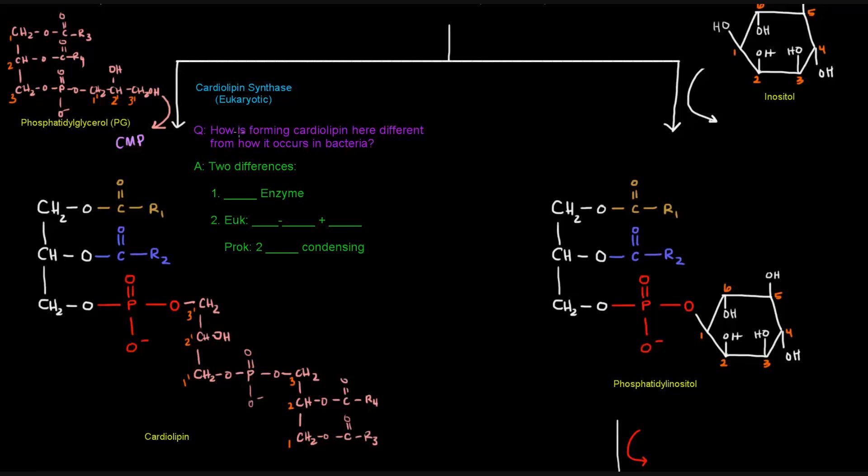Specifically the eukaryotic version of that enzyme. So how is forming cardiolipin here different than how it occurs in bacteria? Well, one thing is that here we have a eukaryotic enzyme, so that's different, whereas before we had the bacterial enzyme.